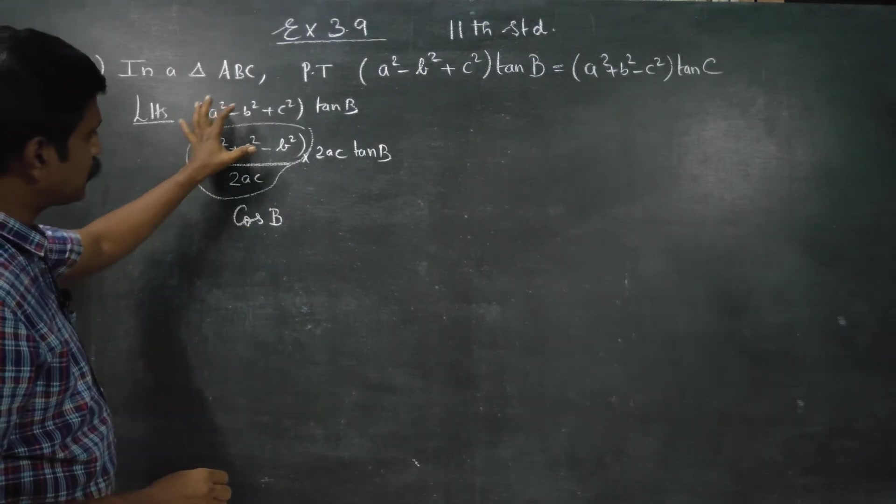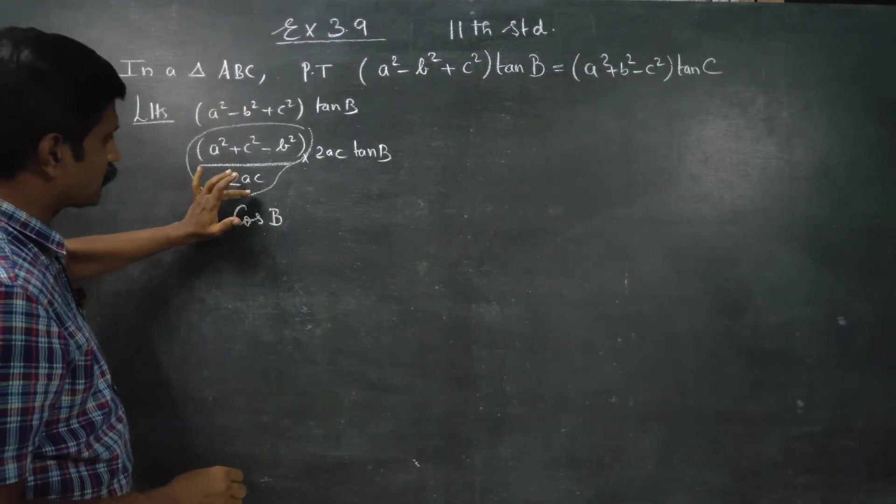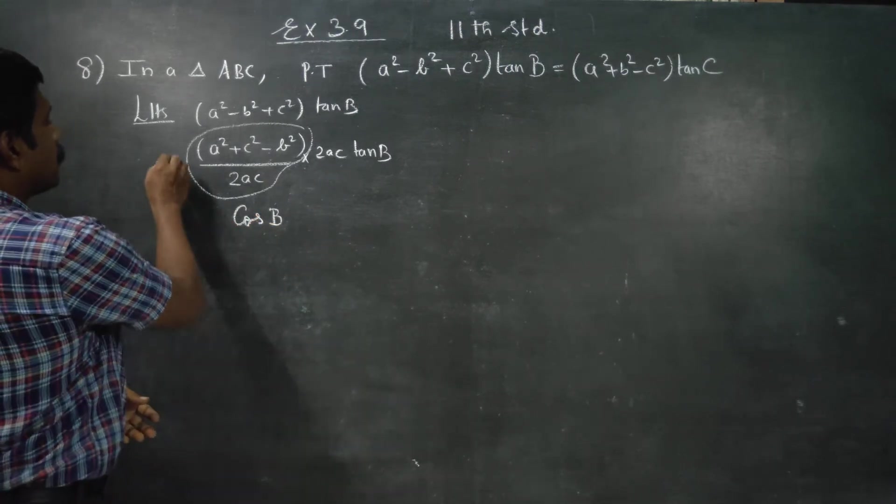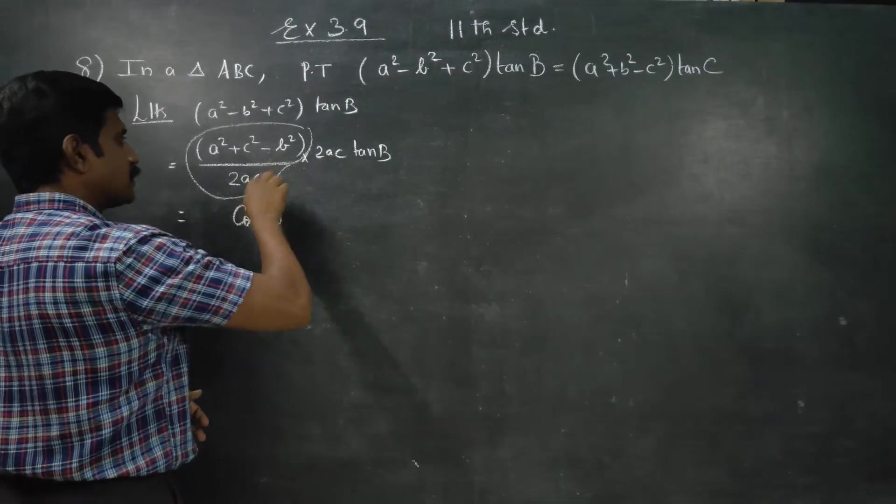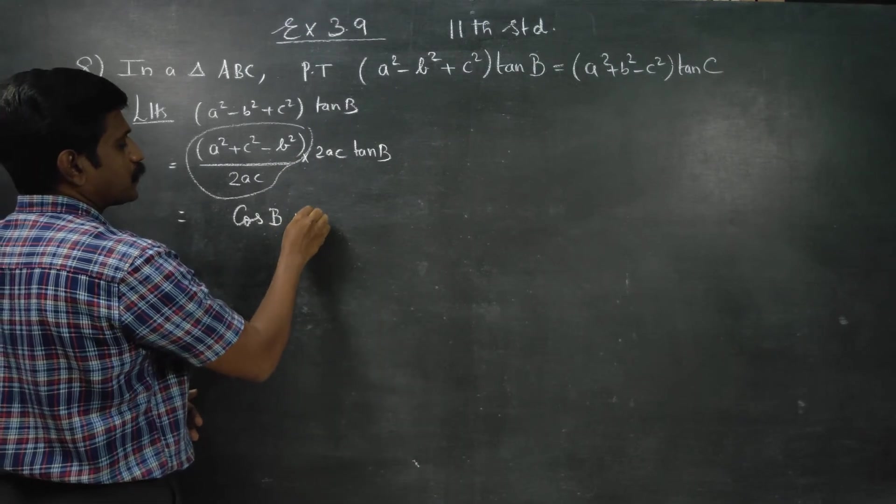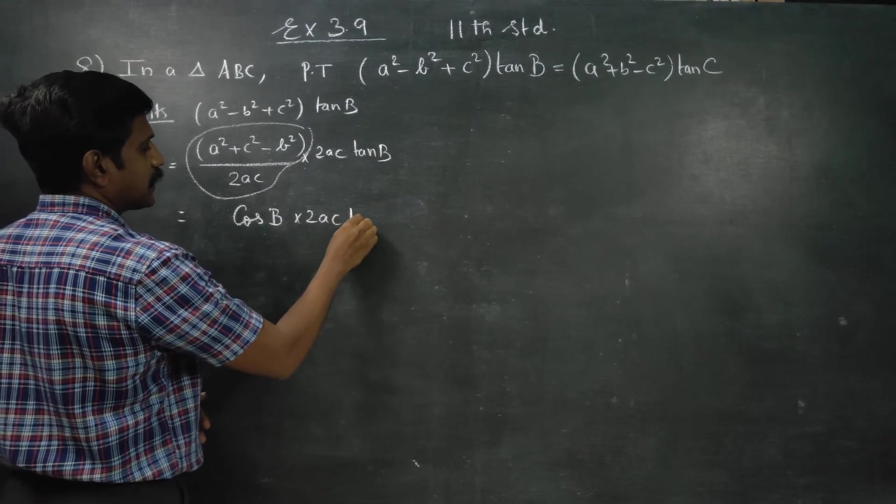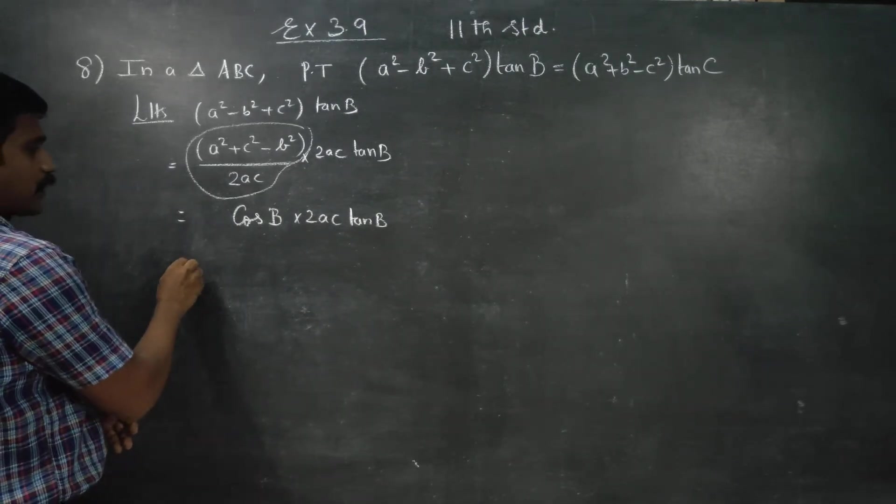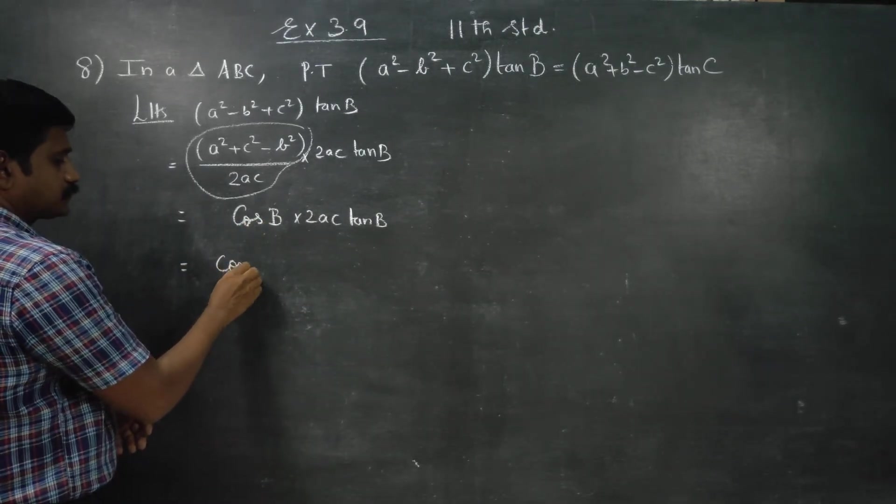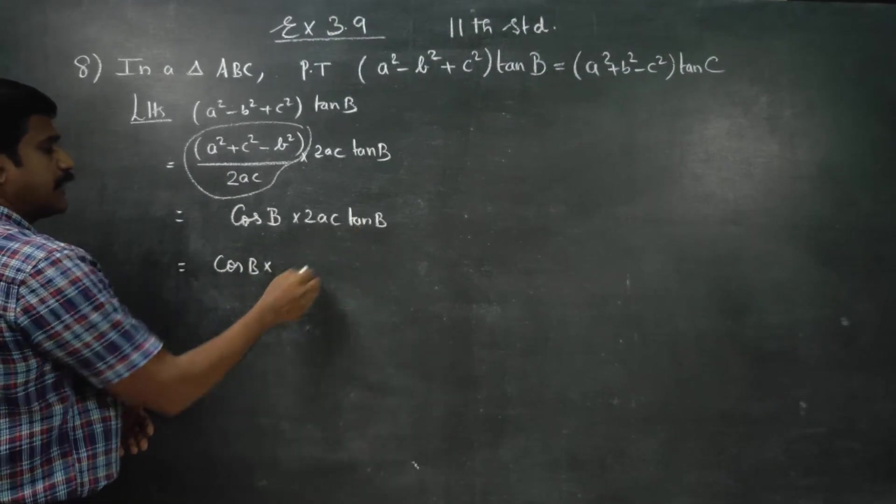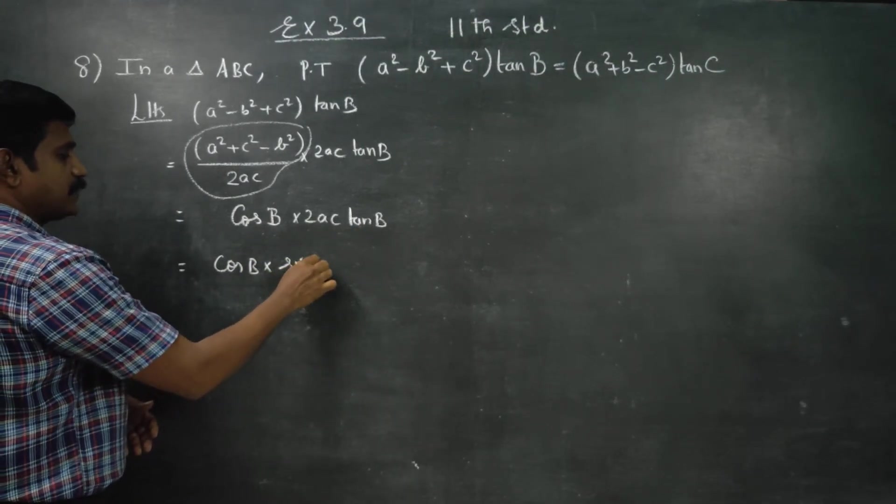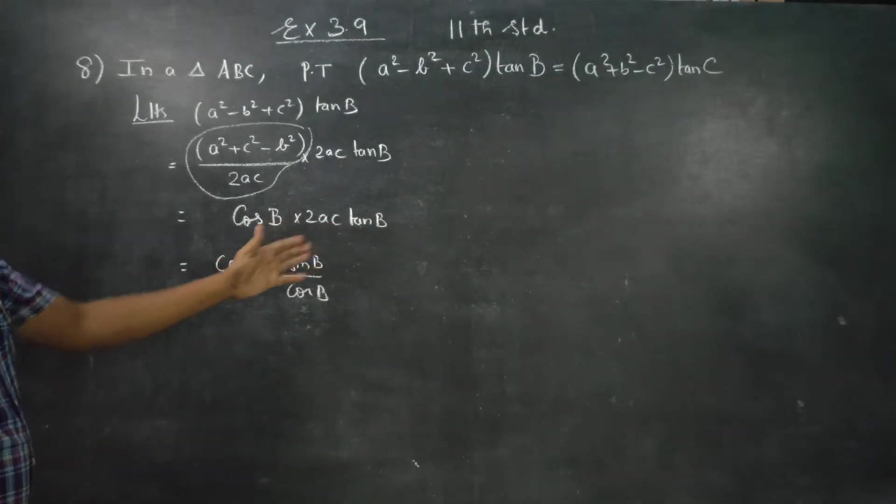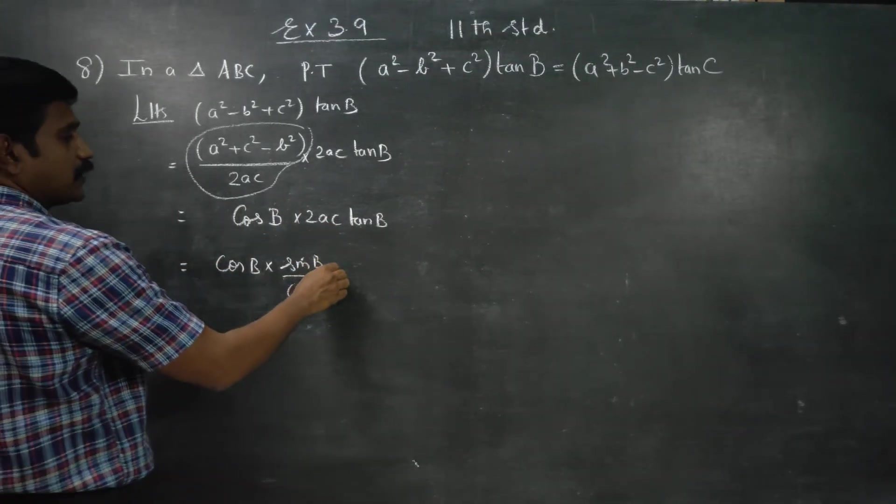That's why I am going to multiply and divide by 2AC, tan B, right?